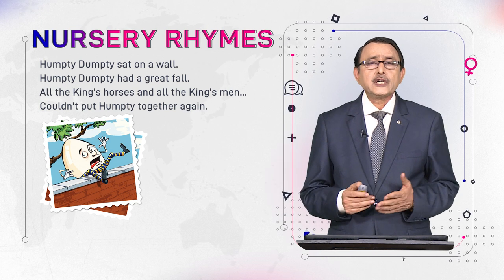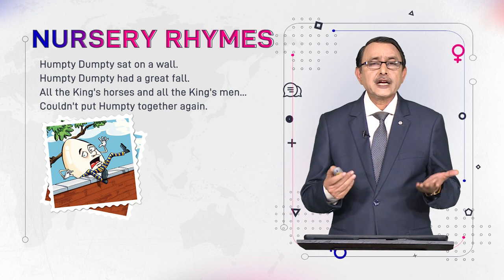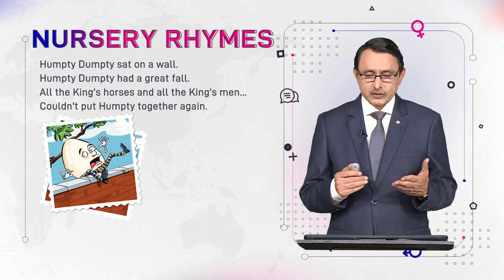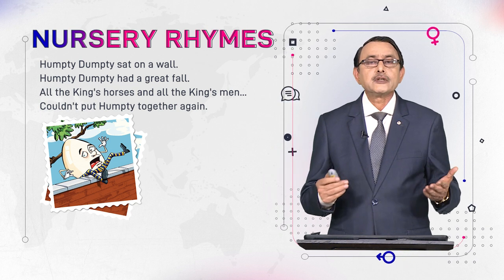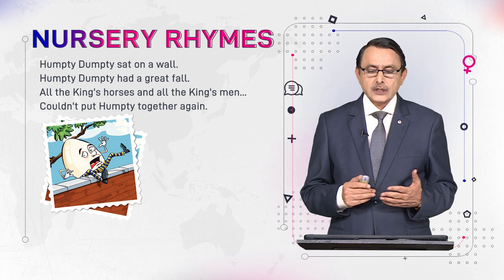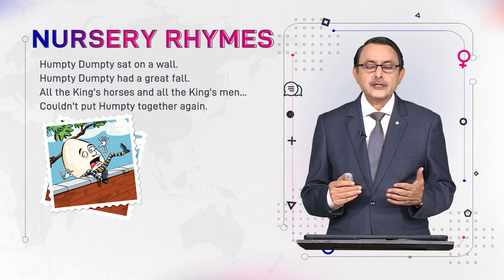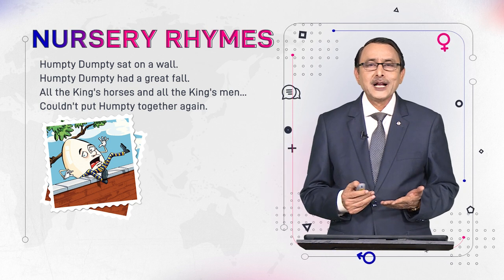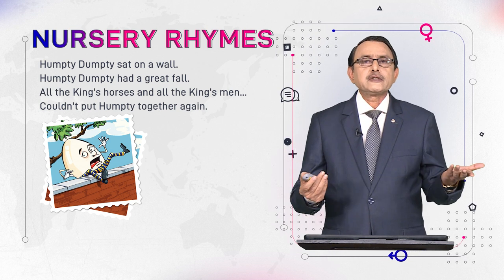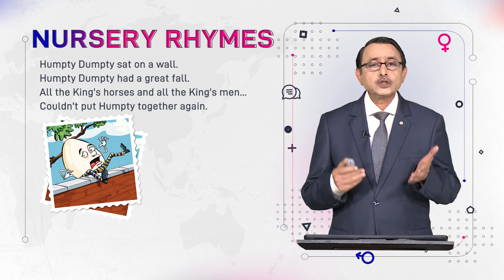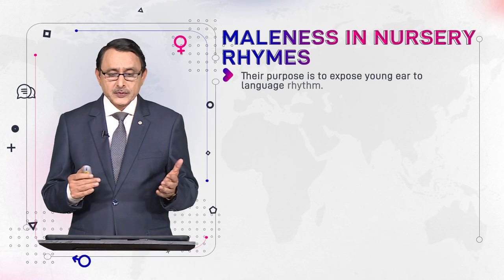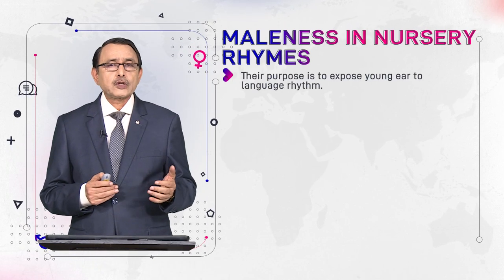Originally it was a riddle and from a riddle it has become a rhyme. This is a character that is of egg shape, and the poem tells us: Humpty Dumpty sat on a wall, Humpty Dumpty had a great fall, all the king's horses and all the king's men couldn't put Humpty Dumpty together again. Their basic purpose is to expose the young ear to rhythm, to the music of language.